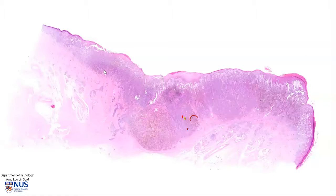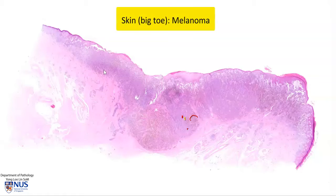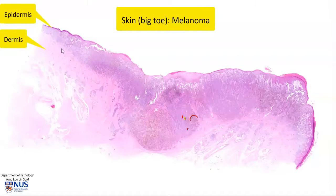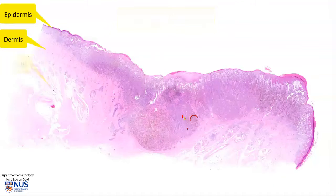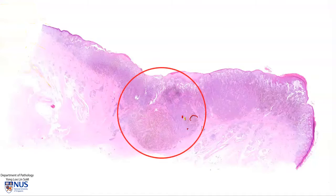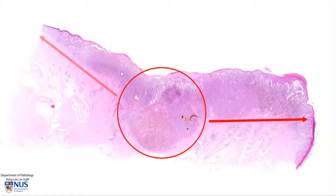This is a virtual microscopy slide showing a melanoma of the big toe. We are looking at the skin, where we can see the epidermis, the dermis, and the subcutis. The main bulk of the tumor is in the central area, but it is also extending to the right side and to the left side.